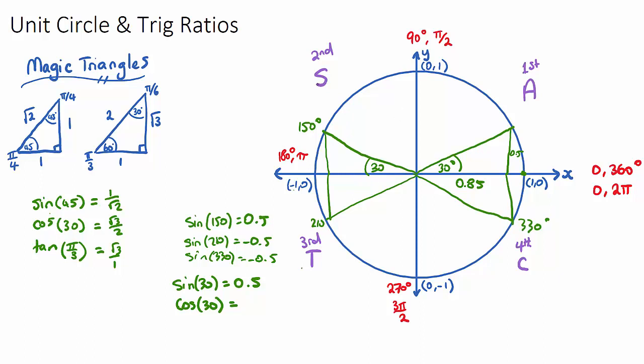In the third quadrant, only tan is positive because both sine and cos, the height and the width, will be negative. Tan is actually a negative over a negative, which will turn it positive.